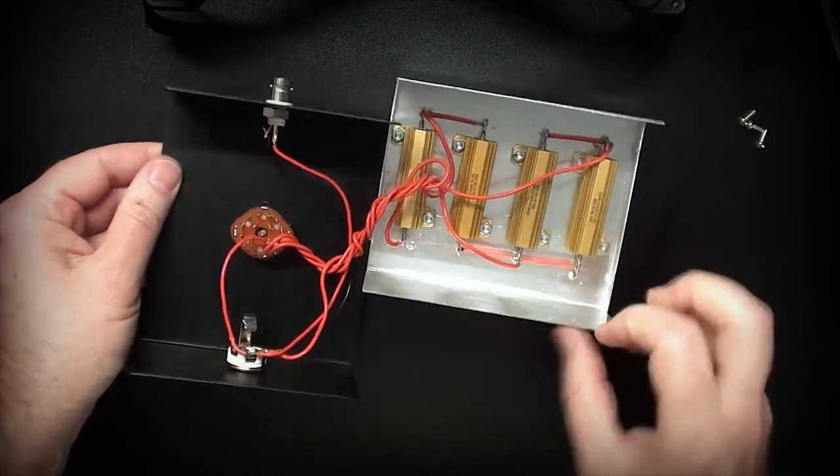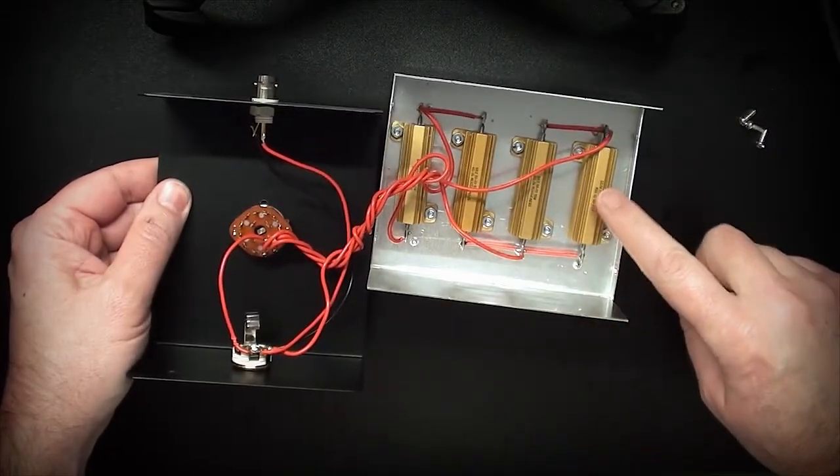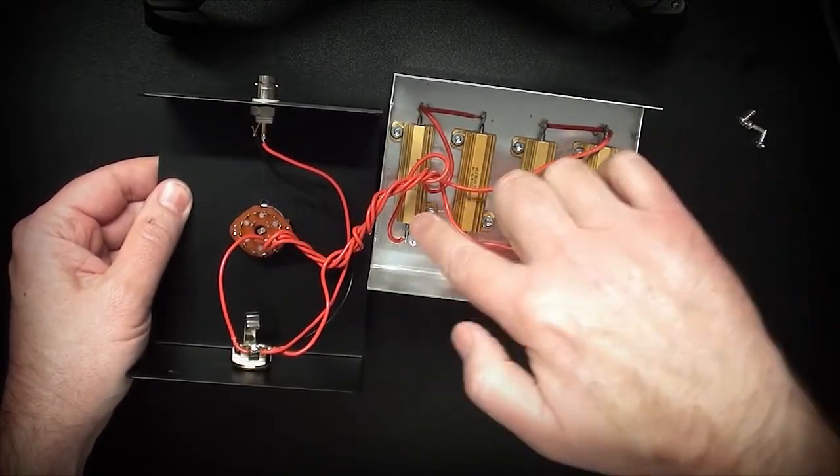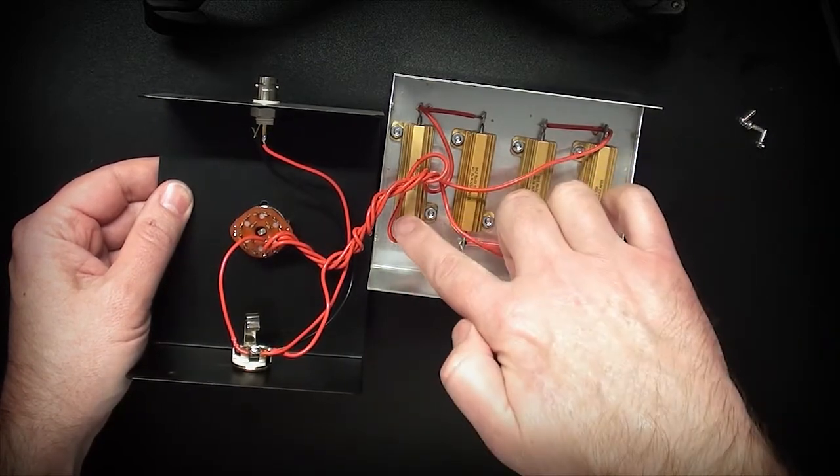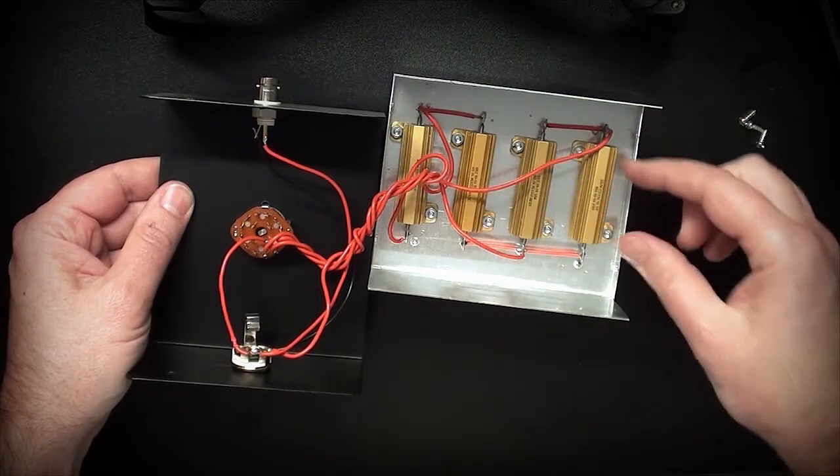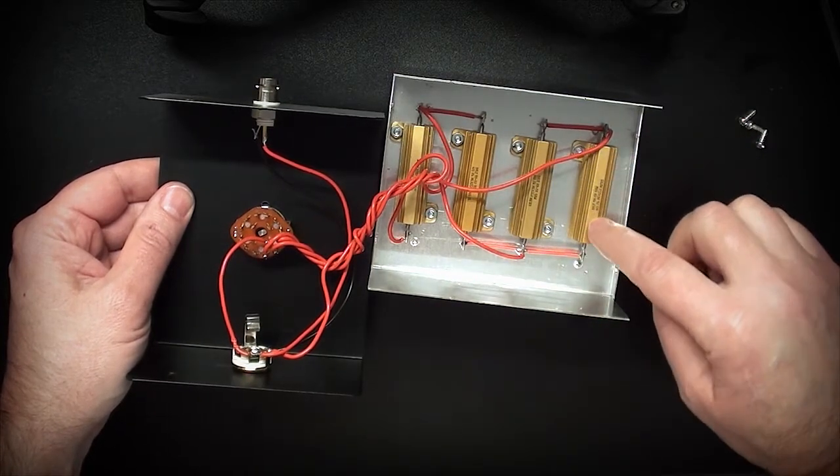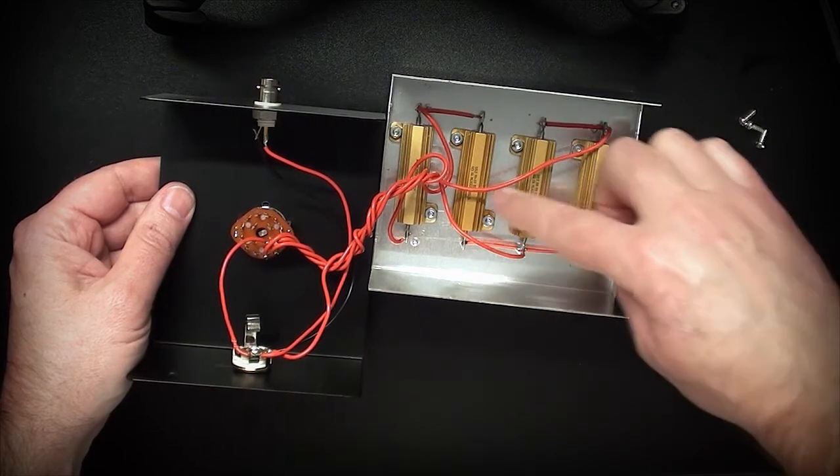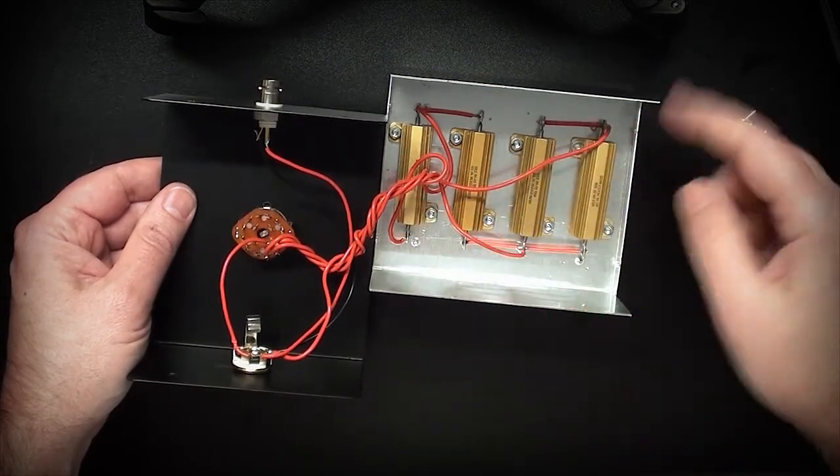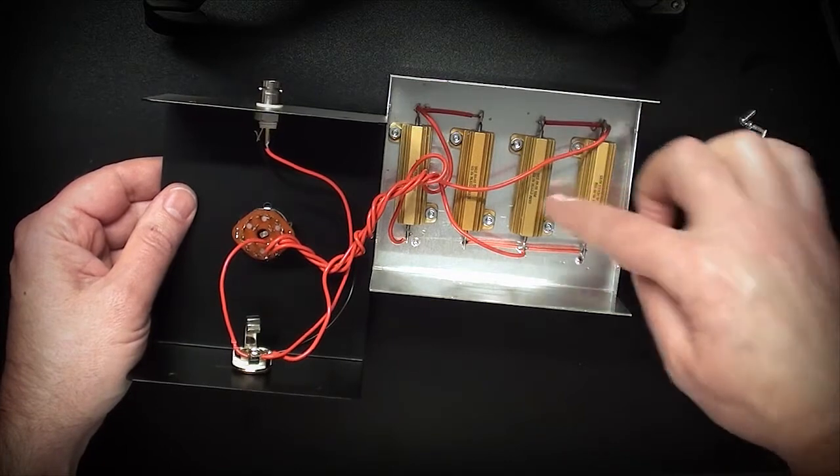All right, so we have four power resistors - three 8 ohm and one 4 ohm. They are Dale manufacturer power resistors with aluminum casing. This helps dissipate the heat. They're also bolted to this piece of aluminum which helps dissipate the heat.